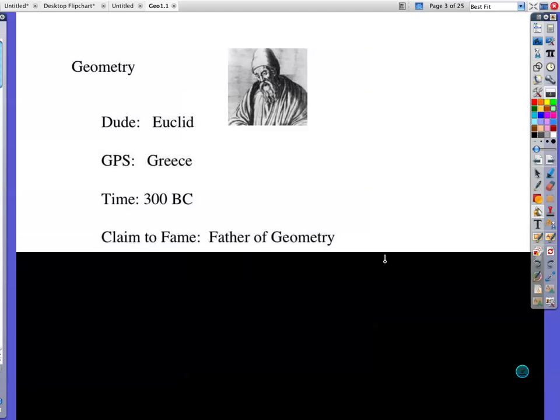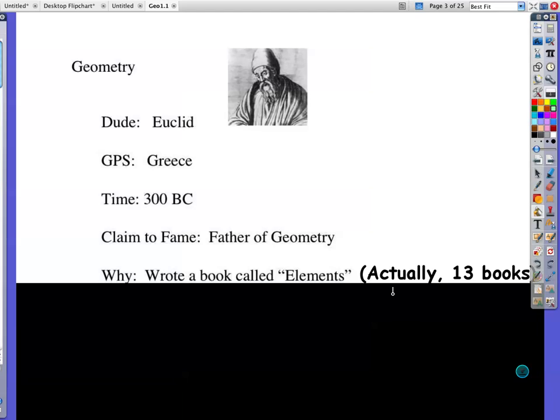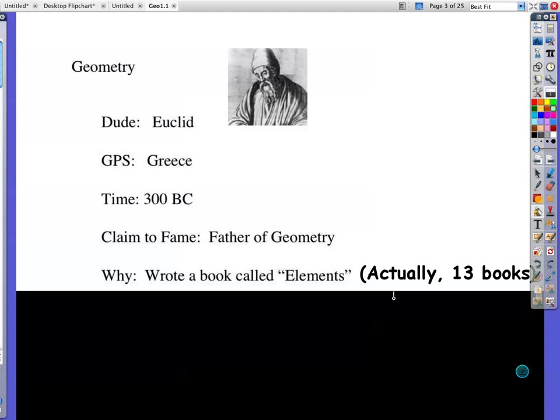This is his claim to fame. He's the father of geometry, and the reason is he wrote a book called The Elements, and actually it's a set of 13 different books, and you only have one book. So good thing you're not taking class right from Mr. Euclid himself.